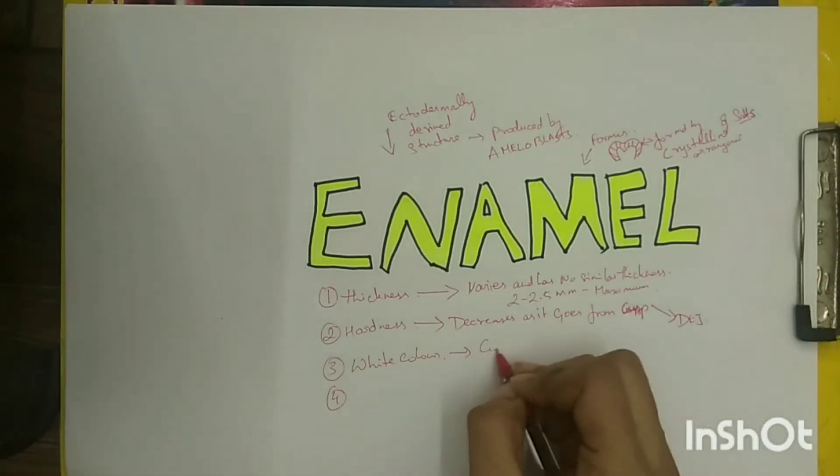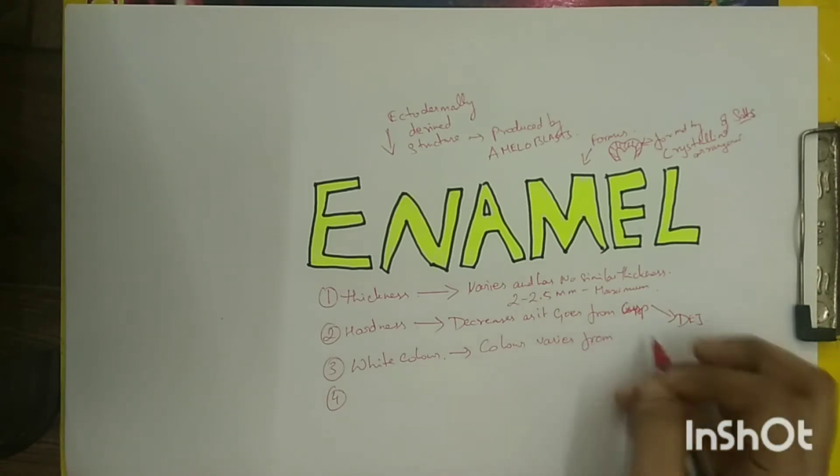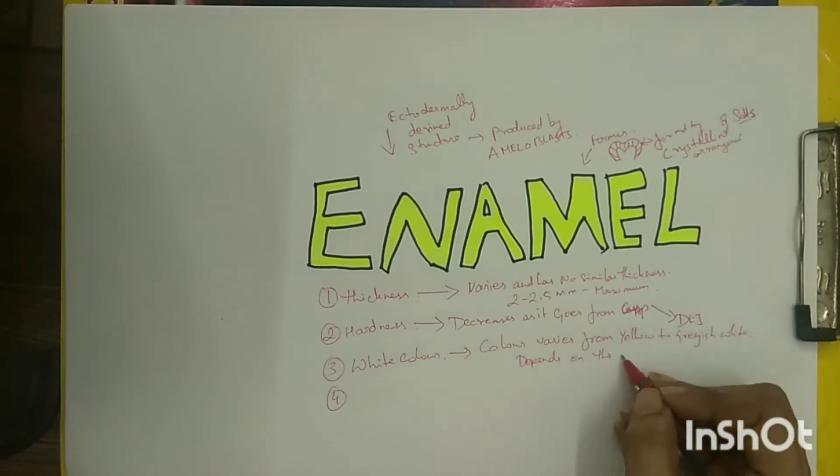The color of enamel varies from light yellow to grayish white as the color depends on the translucency of the enamel. If it is translucent, it exhibits yellow color as it reflects the color of the dentin. The cervical area appears slightly yellow even in grayish white teeth as a result of thinner enamel layer in the cervical region.